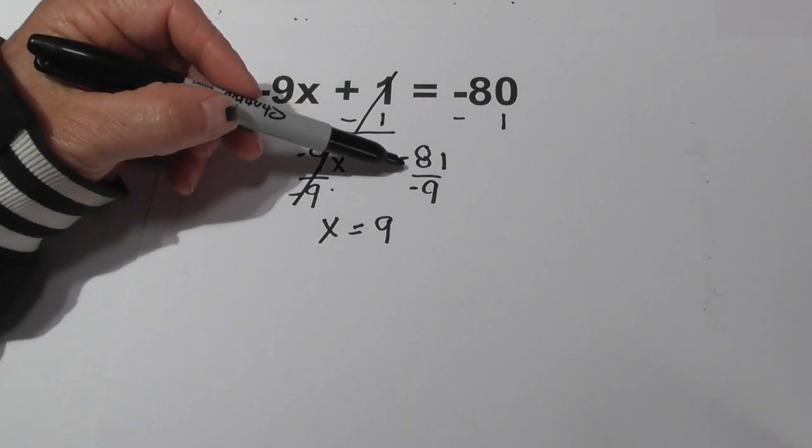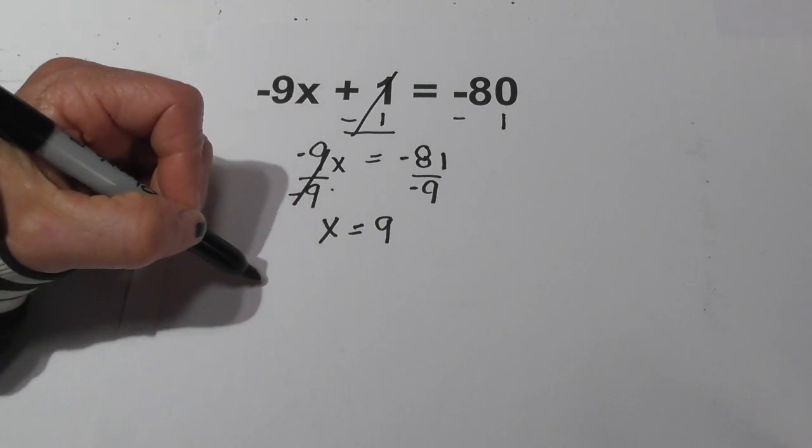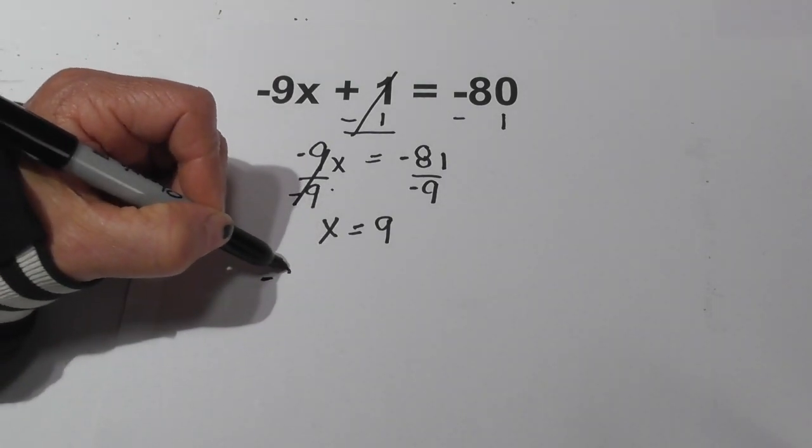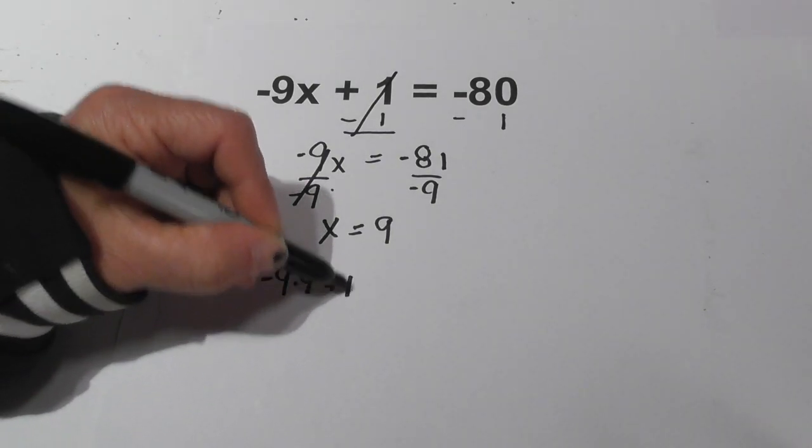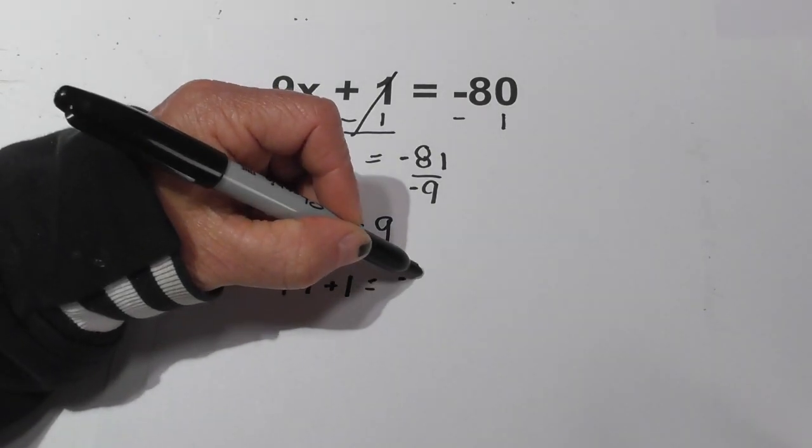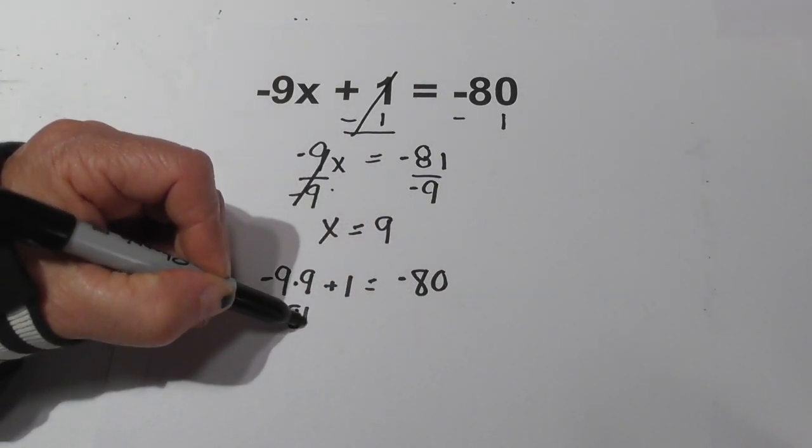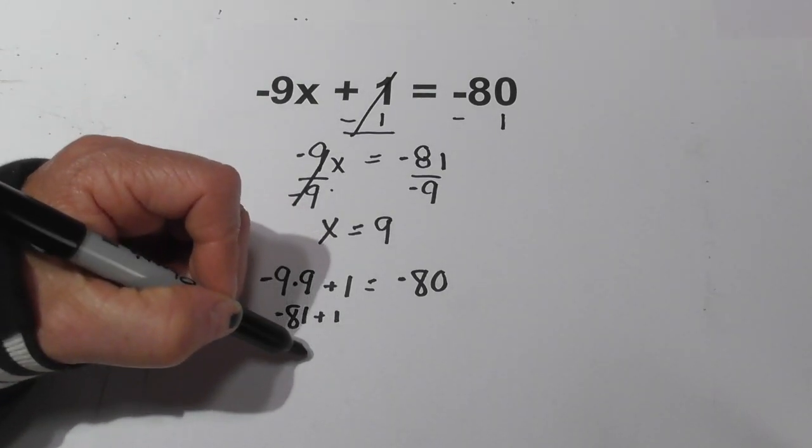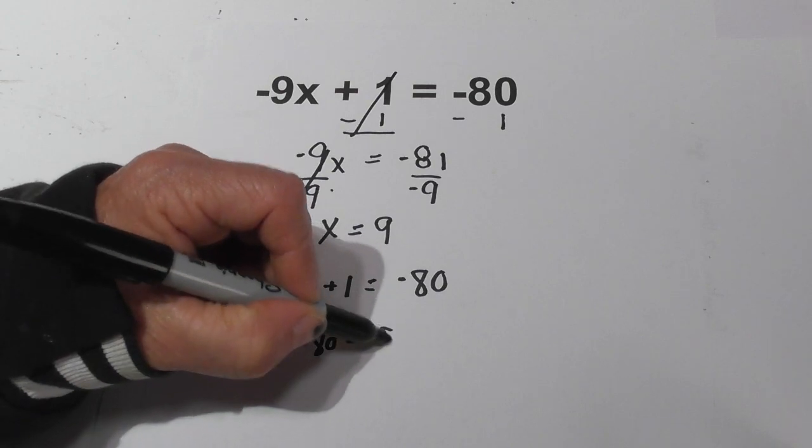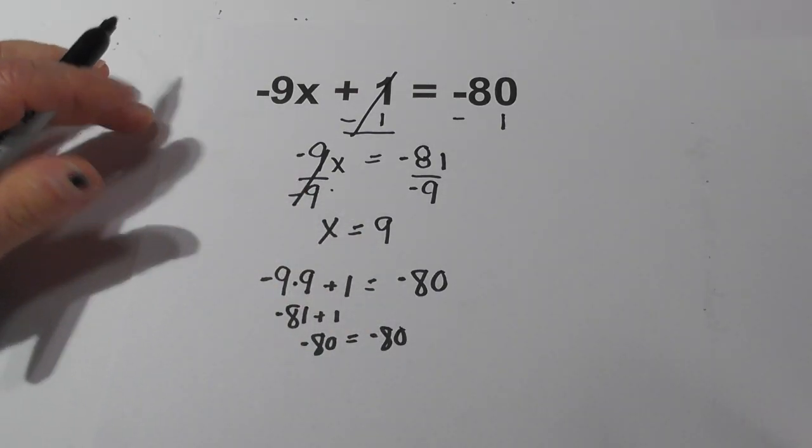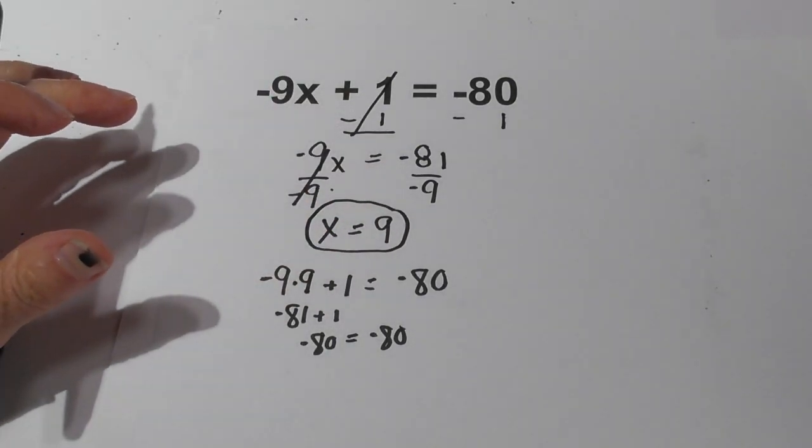And two negatives, when you divide those, is a positive number. Now let's plug this into the original equation. Negative 9 times 9 plus 1 equals negative 80. Well, negative 9 times 9 is negative 81 plus a positive 1, which does indeed equal negative 80. So the answer x equals 9 is correct.